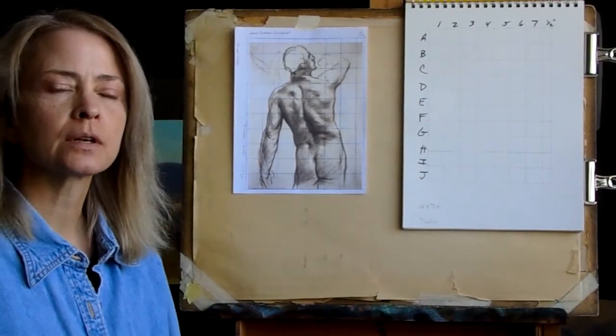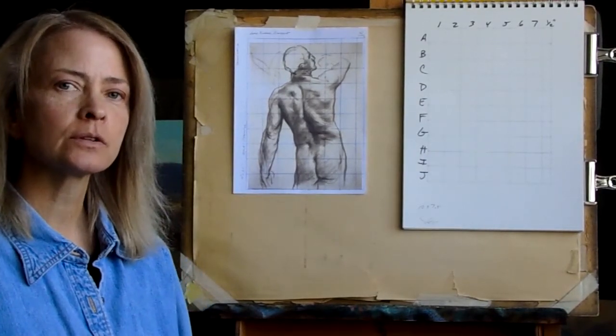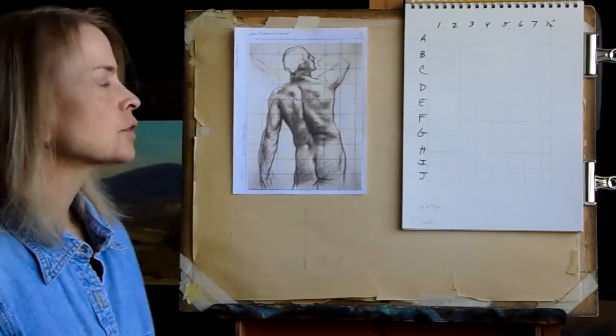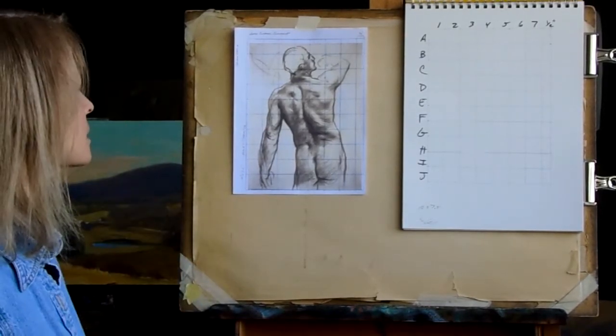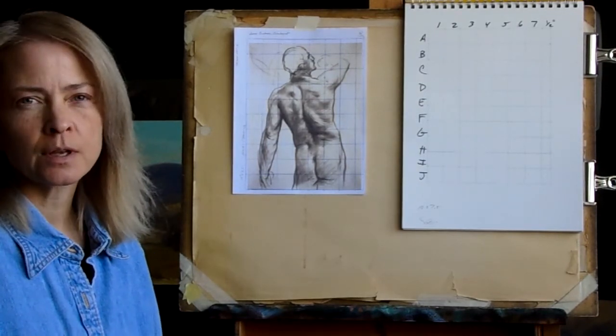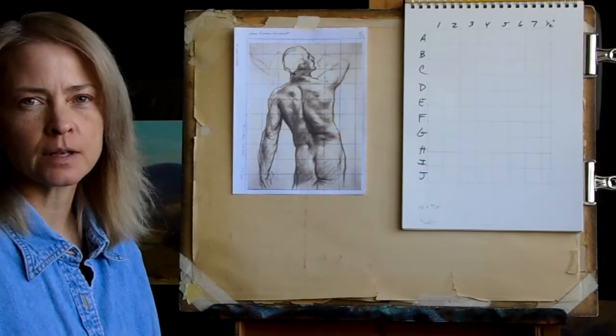This lesson is focused on copying John Singer Sargent's male figure. Now this drawing is a study for a figure that appears in Sargent's murals at the Museum of Fine Art in Boston.